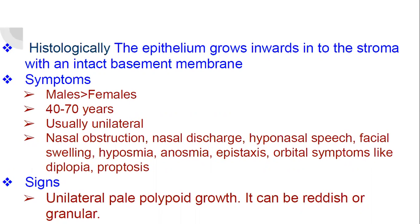Coming to the symptoms: males are more commonly affected than females. The age group affected is 40-70 years. It is usually unilateral. There will be associated nasal obstruction, nasal discharge, hyponasal speech, facial swelling, hyposmia or anosmia, epistaxis, and orbital symptoms like diplopia or proptosis.